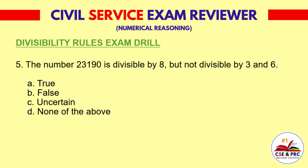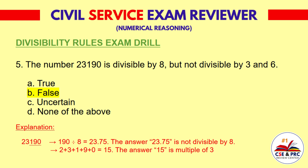Question 5: The number 23,190 is divisible by 8, but not divisible by 3 and 6. True or False? The answer is B: False. Explanation: 190 divided by 8 equals 23.75, so 23,190 is not divisible by 8. However, 2+3+1+9+0 equals 15, which is a multiple of 3.